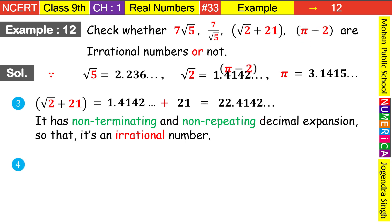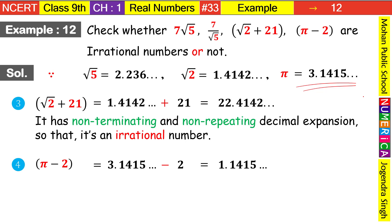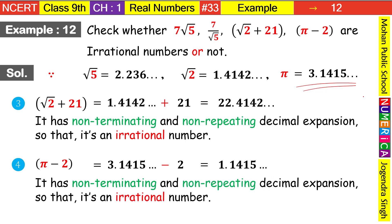Now our last question: π - 2. The value of π = 3.14159... We replace π and subtract 2: 3 - 2 = 1, and the decimal part 0.14159... remains as-is. The result is 1.14159..., which has non-terminating and non-repeating decimal expansion, therefore it is an irrational number.